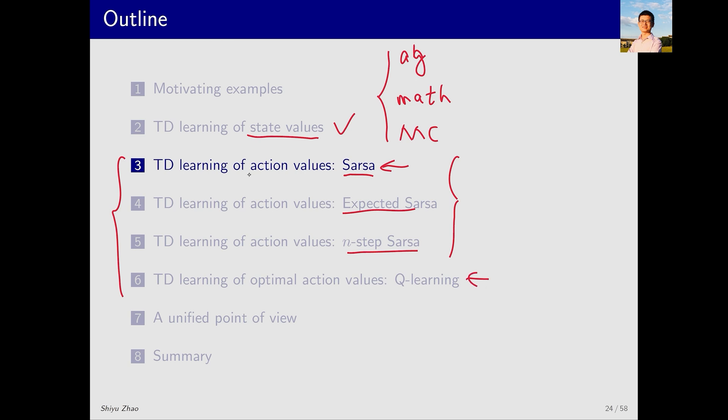What do SARSA and its variations do? Given a policy, they can estimate the action value, thus performing policy evaluation. By combining this with policy improvement, we can find optimal policies. Q-Learning, on the other hand, directly solves for the optimal action value, thereby finding the optimal policy directly.